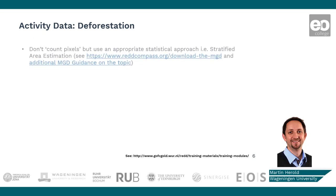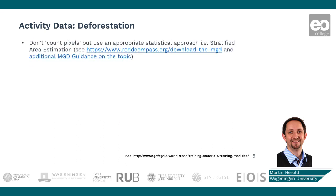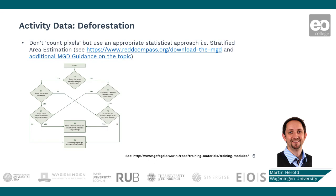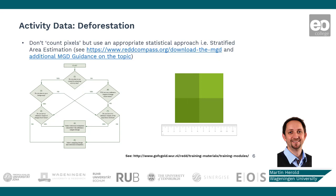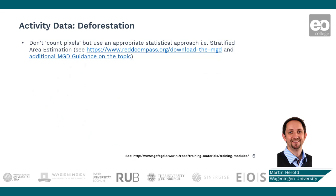It is very important that activity data are in area units — hectares — and they need to be statistically robust estimates. That is why, if you have maps of multiple points in time, you don't just count the pixels of forest and non-forest to get an area estimation, but you use that as input to a stratified area estimation procedure that gives you statistically robust area estimates and confidence intervals. Guidance on that is provided, for example, by the methods and guidance document of GFOI.